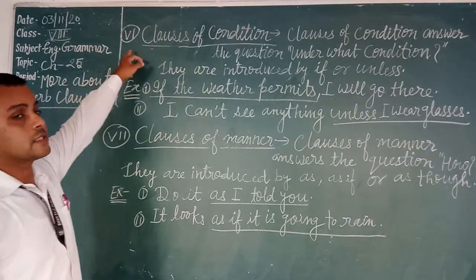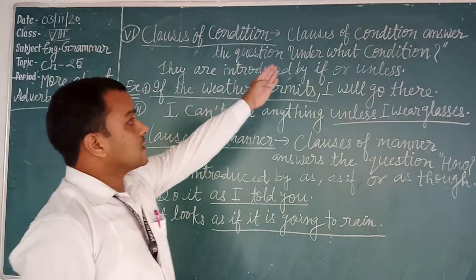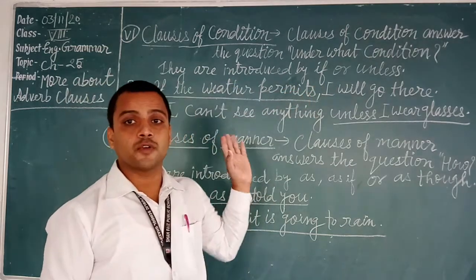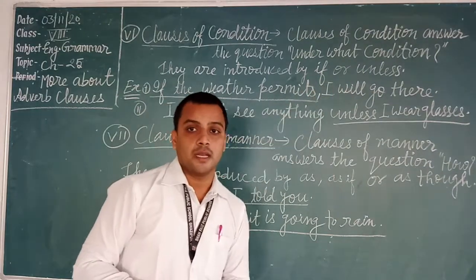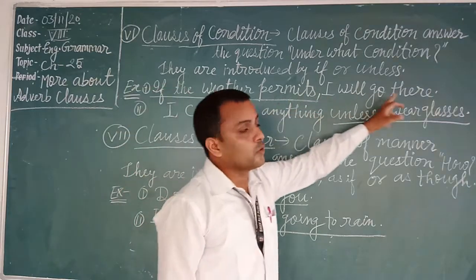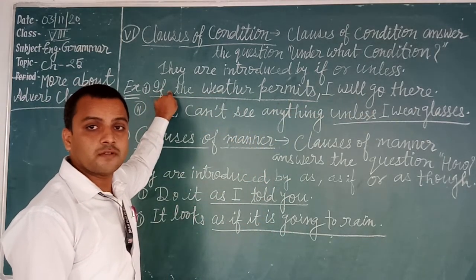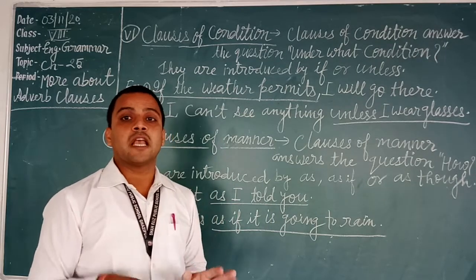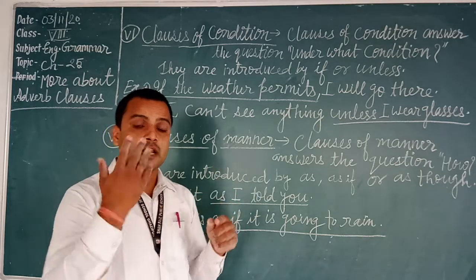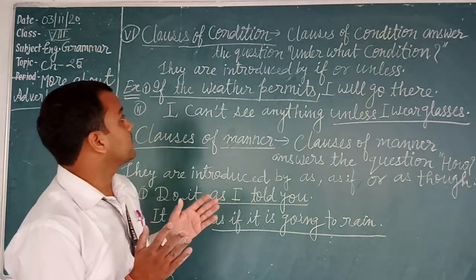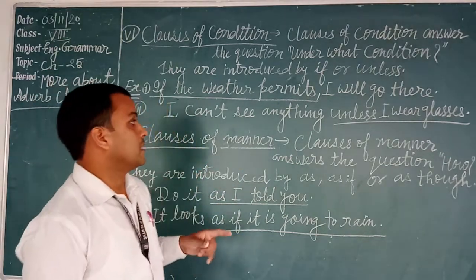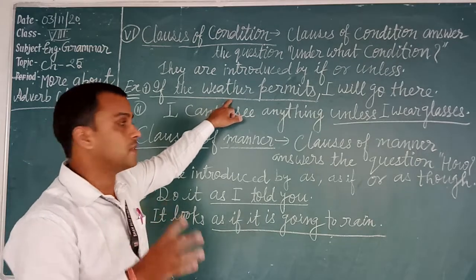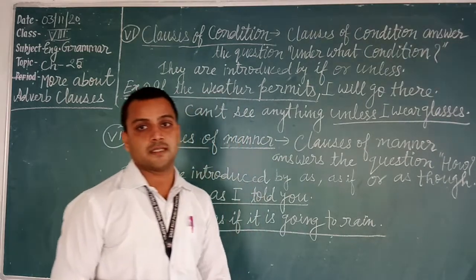Now the sixth kind: clauses of condition. A clause of condition answers the question 'under what condition.' They are introduced by conjunctions like 'if' or 'unless.' For example: 'If the teacher permits, I will go there.' Another example: 'If you come to me, I will give you 500 points.' The conjunction 'if' always shows a condition. Also: 'I cannot see anything unless the teacher permits.'